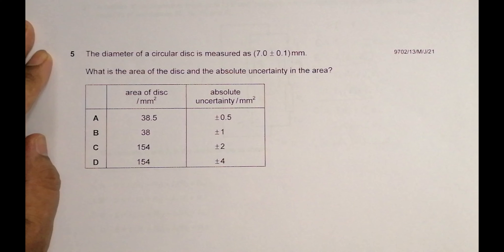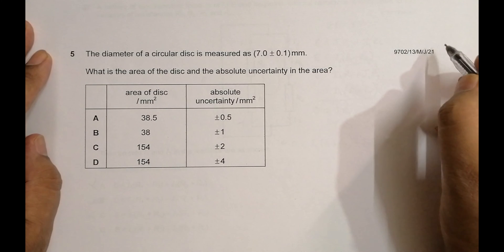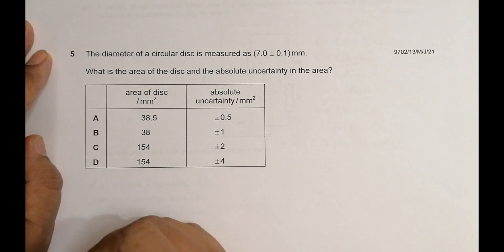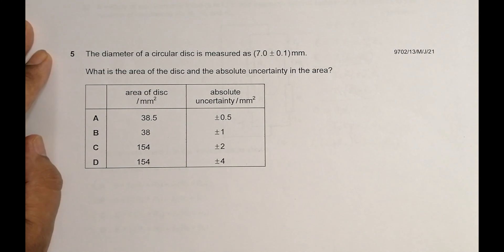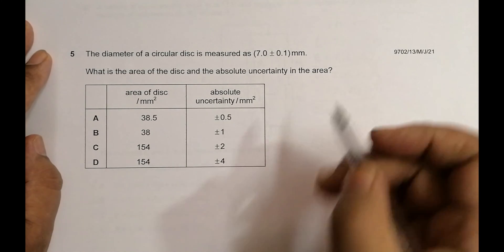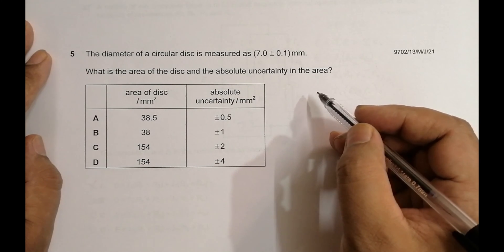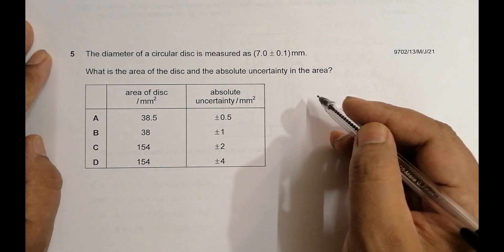Hello folks, today I have a question from 2021 May June, paper 1-3, question number 5. It is concerned with the chapter on measurements, specifically about uncertainty. I haven't dealt with this for a long time — in those days I dealt with them a lot, but thinking people would be bored, I didn't do. So here I have again a new question, so let me refresh that.